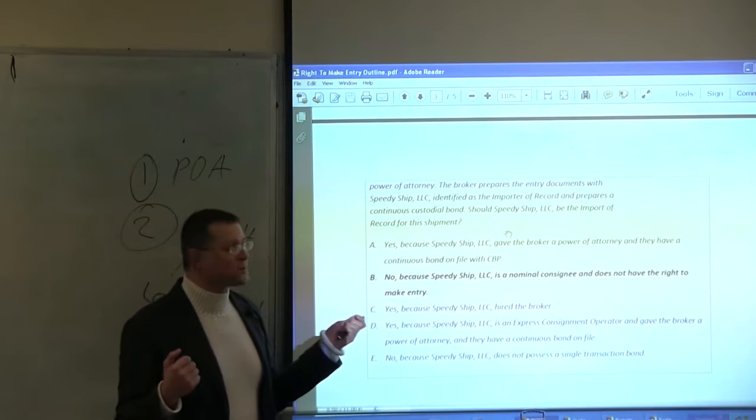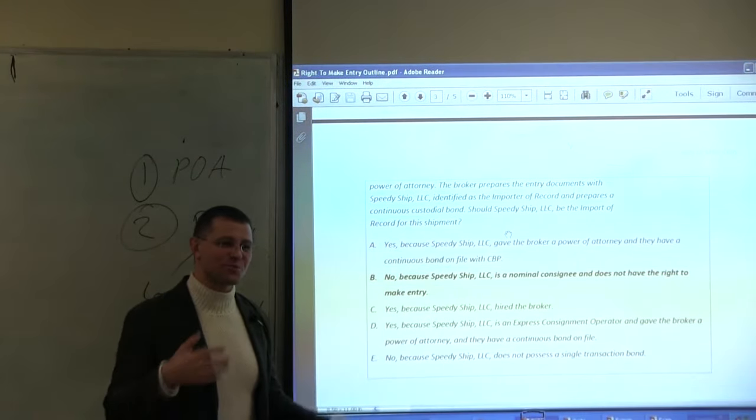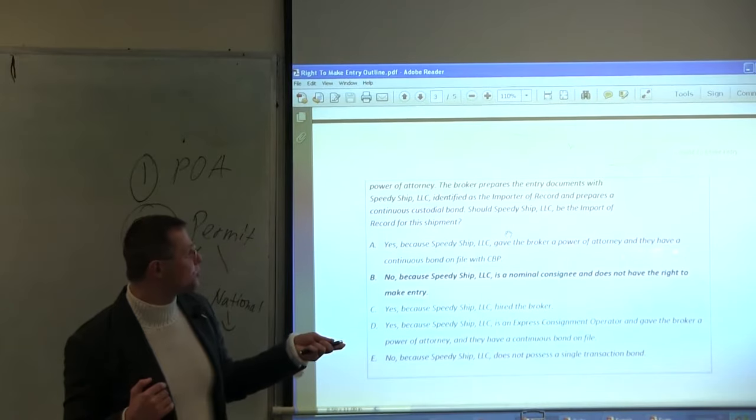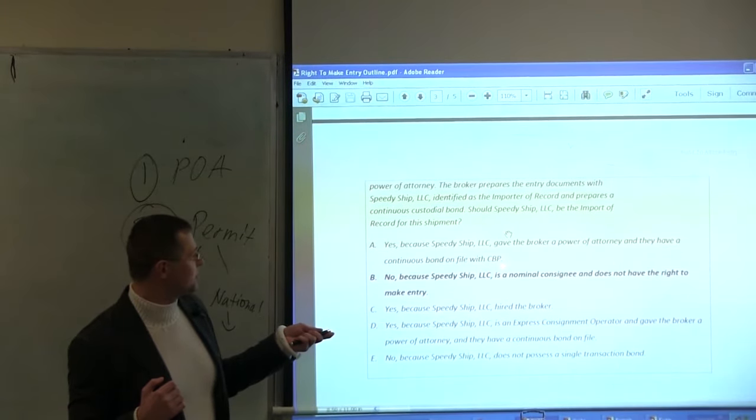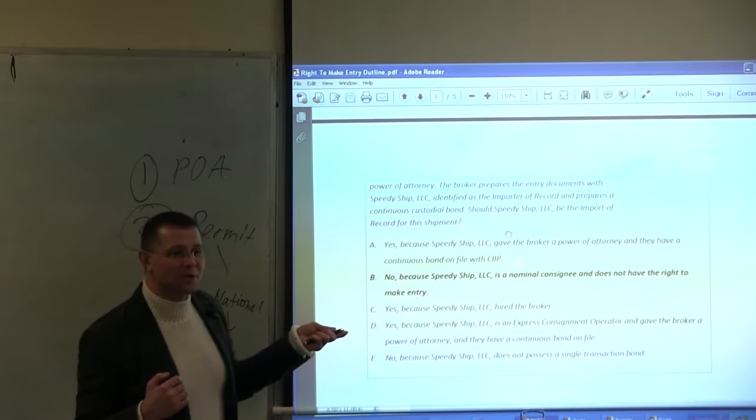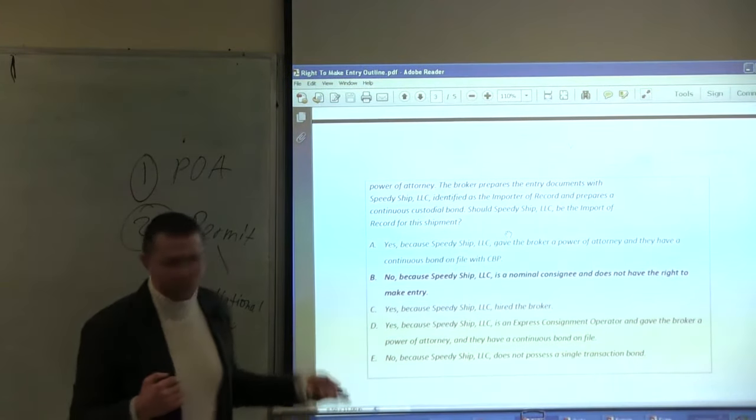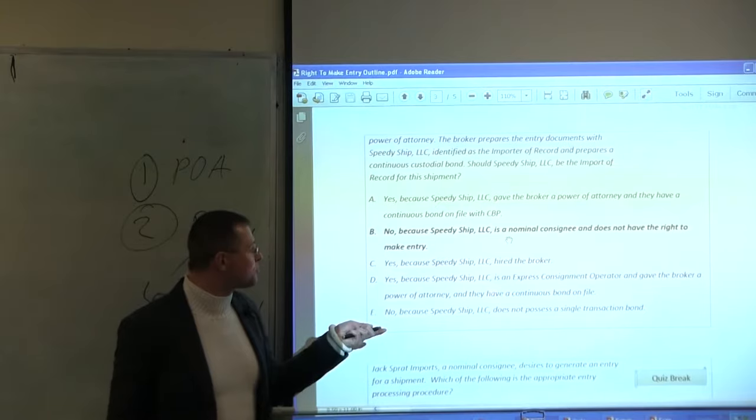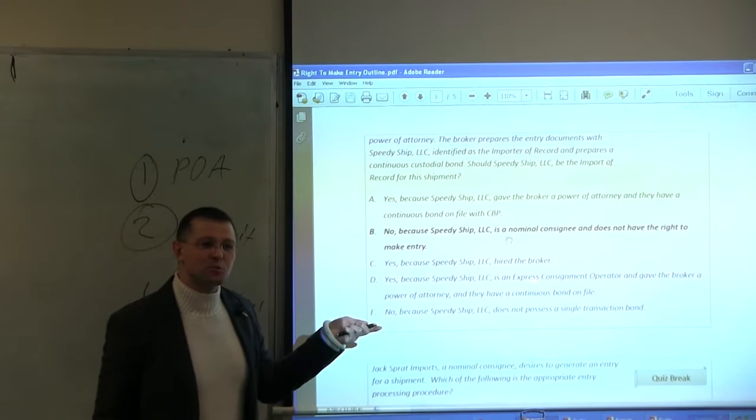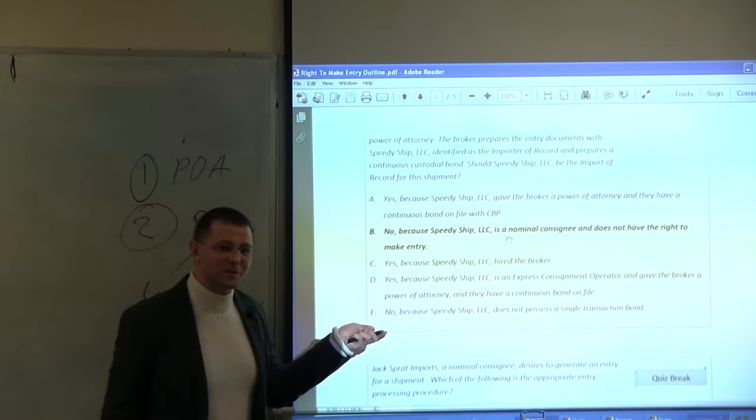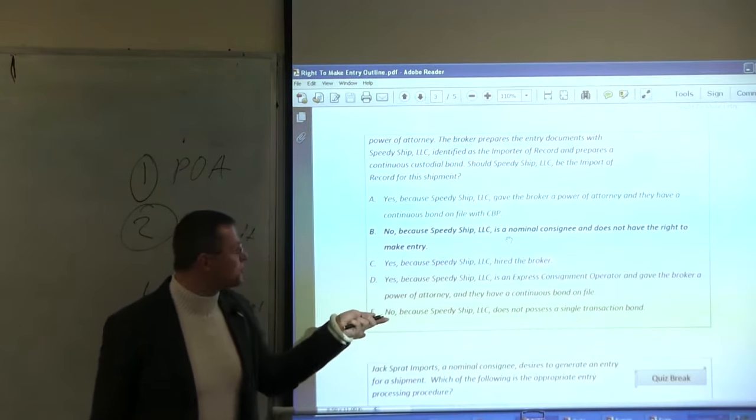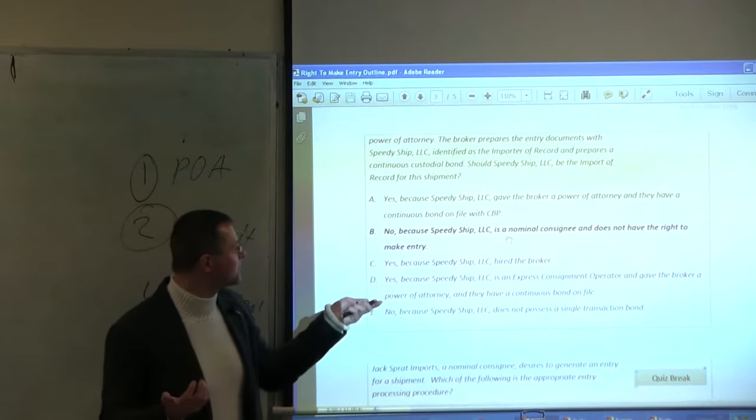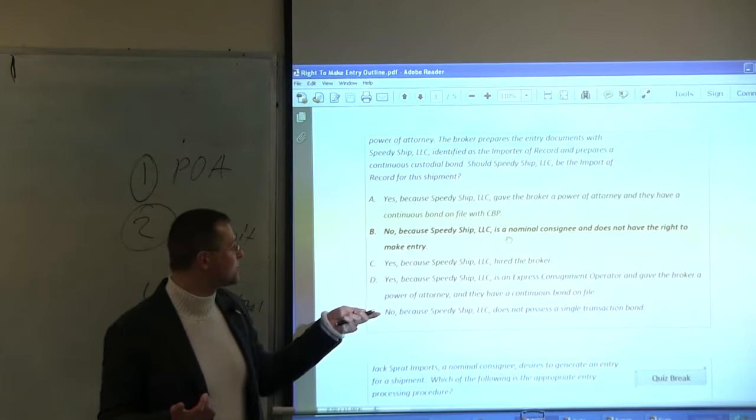Yeah? This is a good question. I think this is a good question because it covers a lot of things. Notice, yes, because SpeedyShip.LC gave the broker power of attorney and they have a continuous bond on file with CBP. Well, you can't do that because you are nominal consignee. This is not good enough. Look at this one. SpeedyShip.LC hired the broker, but the broker must be authorized broker and the broker must do the proper job, right?